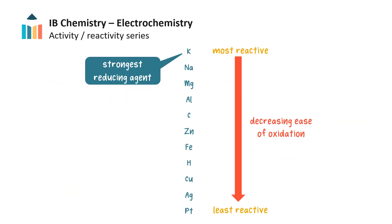From knowledge of reactivity trends or data given in a particular question, we can construct an activity or reactivity series — a list of elements in order of decreasing reactivity. Elements at the top of the list are readily oxidized and are strong reducing agents, while elements at the bottom are difficult to oxidize and are weak reducing agents. Note that the non-metals hydrogen and carbon are often included in an activity series near the middle level.